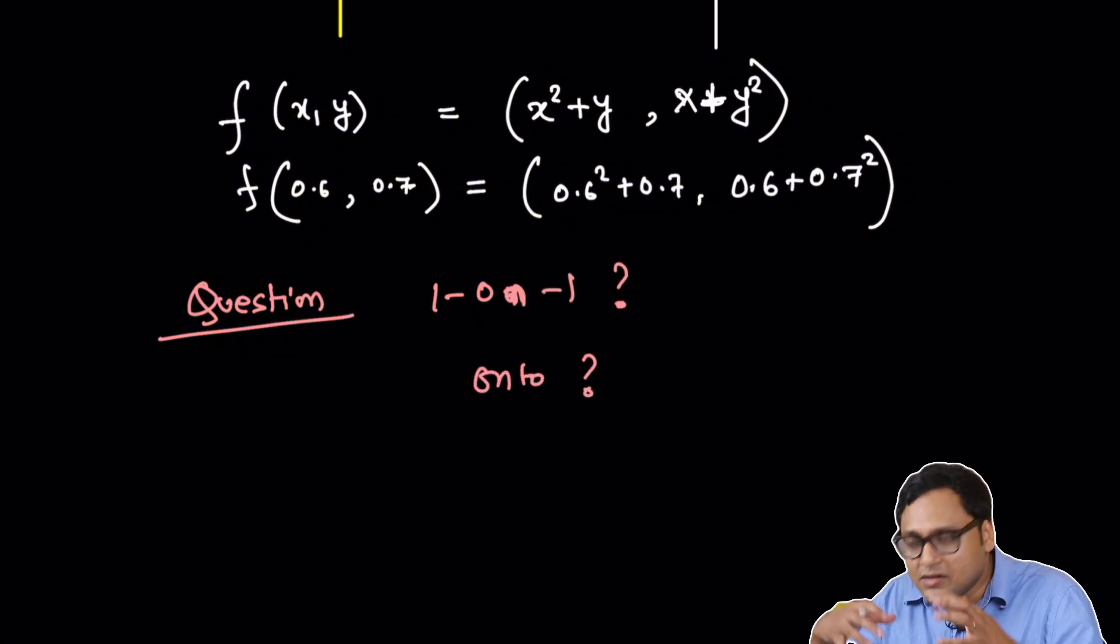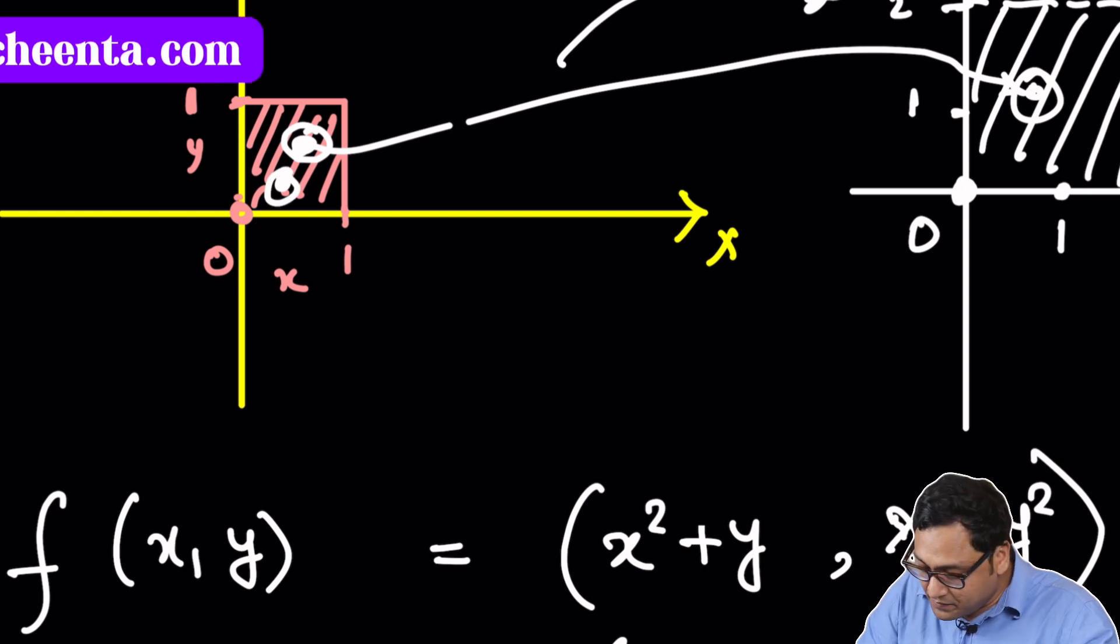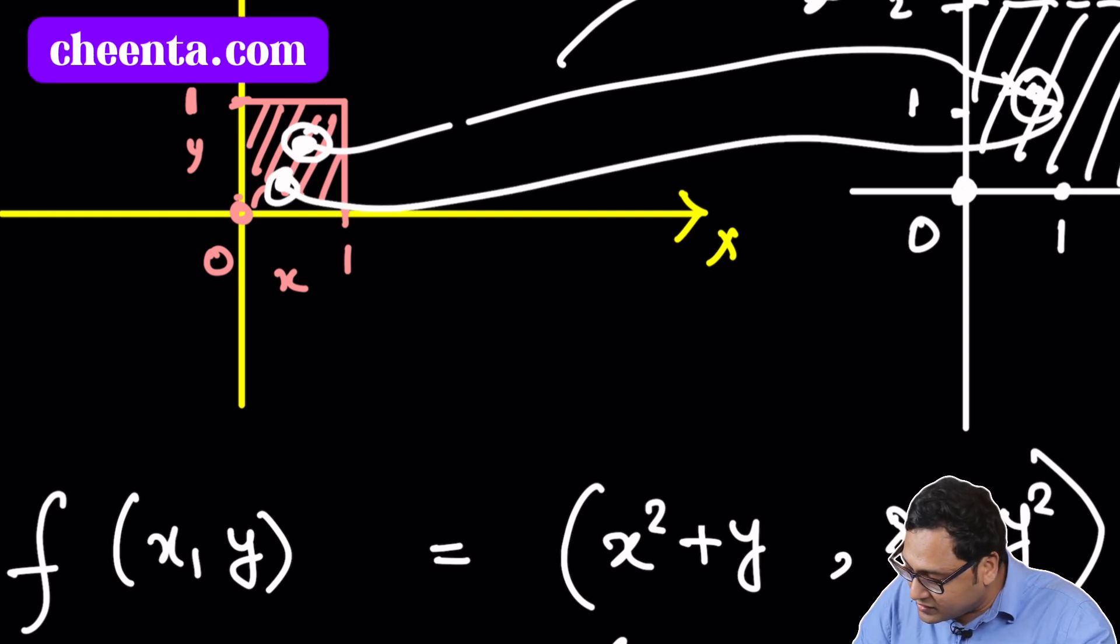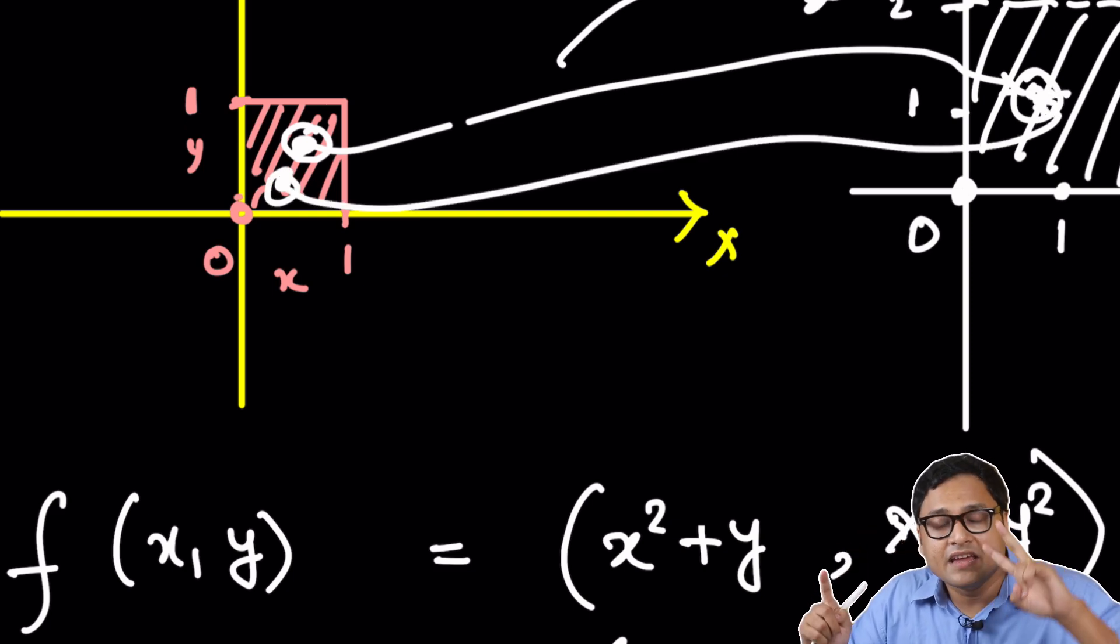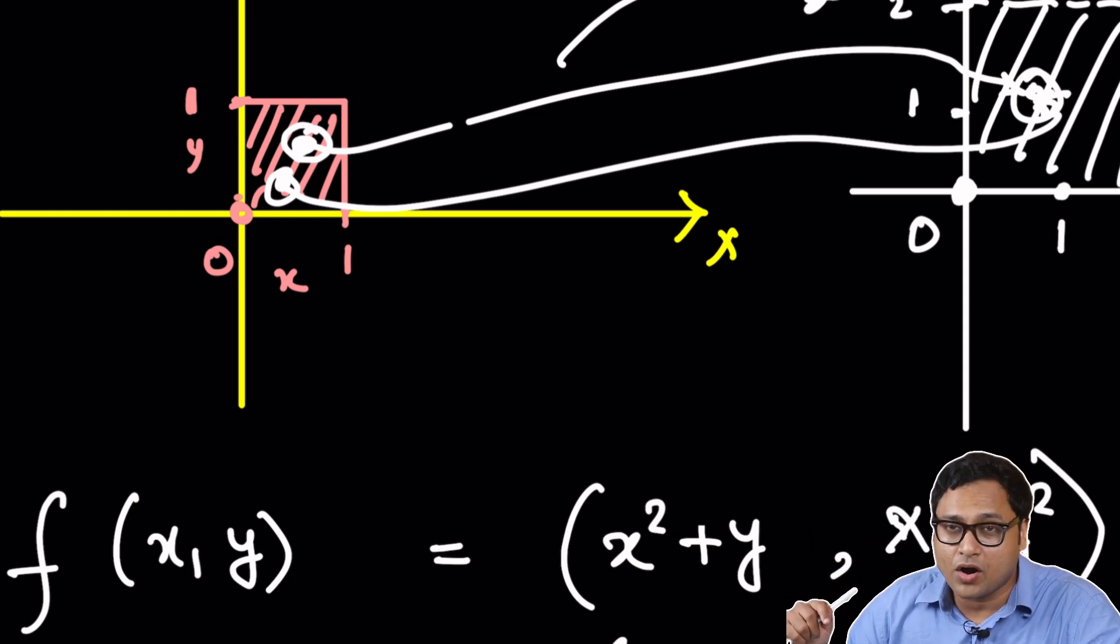What does one-to-one mean? So let's look at the diagram and understand. The question is, are there two points, maybe these two points, which are mapping to the same point? If that happens, if two points map to the same point, then it's not a one-to-one function.